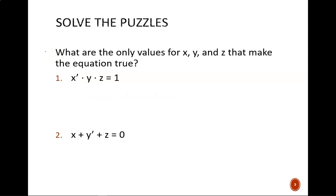Let's look at this first puzzle. Think back to how the AND operator and NOT operator work, and try to find the set of values for x, y, and z that would make this equation true. Pause the video until you figure it out. The only way to make this work is if x equals 0, y equals 1, and z equals 1.